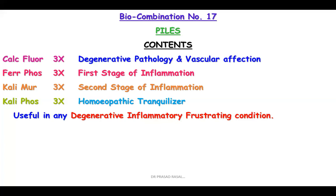Now we will learn Bio-combination 17, which is indicated for piles and hemorrhoids. If you consider its contents logically: Calcarea Fluorica 3x covers degenerative pathology and vascular affections; Ferrum Phos covers the first stage of inflammation; Kali Muri covers the second stage; and Kali Phos is the homeopathic tranquilizer. So instead of just piles, you can think of a number of conditions involving degenerative inflammatory frustrating conditions.